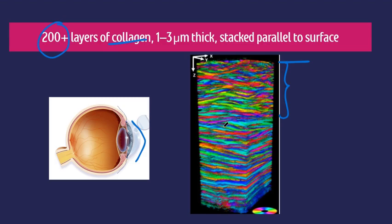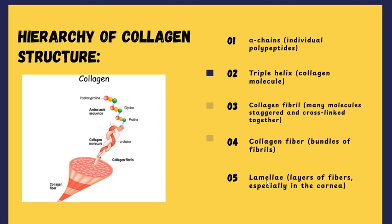Let's zoom in further and understand the hierarchy of collagen — the key structural protein that gives the cornea its strength, clarity, and resilience. Step one: it all begins with alpha chains, individual polypeptide strands. Three of these alpha chains twist together to form a triple helix, known as the collagen molecule — giving collagen its tensile strength. The amino acids involved include glycine, proline, hydroxyproline, and hydroxylysine. Multiple collagen molecules then come together, staggered and cross-linked, to form collagen fibrils.